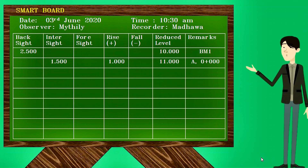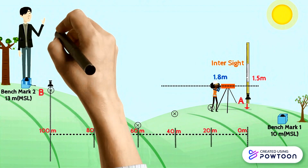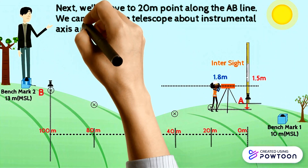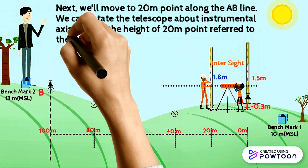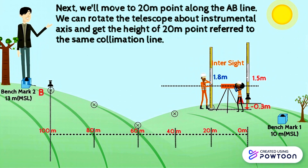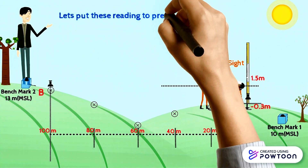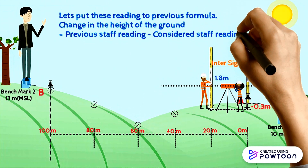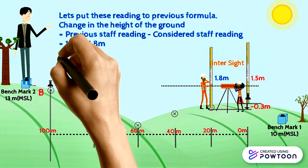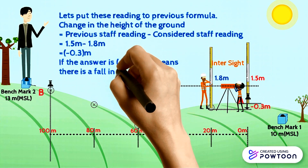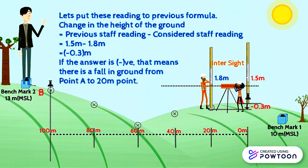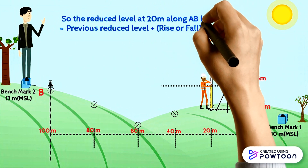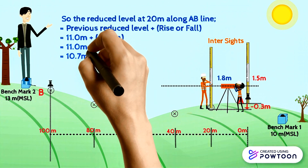In the remarks column, write the point name and the chain age. Next, we move to the 20 meter point along the AB line. We rotate the telescope about the instrument axis and get the height of the 20 meter point referred to the same collimation line. The change in height equals 1.5 meters minus 1.8 meters, which equals minus 0.3 meters. If the answer is negative, there is a fall in the ground from point A to the 20 meter point, giving a reduced level of 10.7 meters.